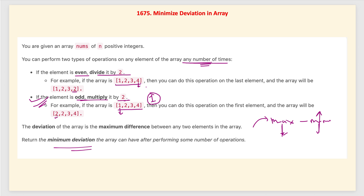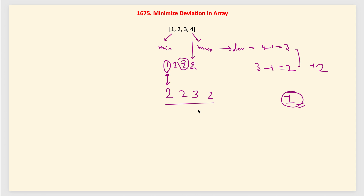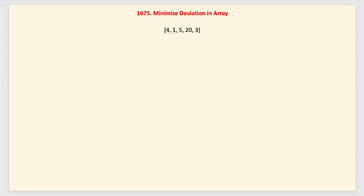What we will do to solve this problem: first, we apply the second operation to every odd number in our array by multiplying it by 2, so that all numbers in the array become even. Then we only follow the even rule to minimize the deviation. For example, in our array the odd numbers are first multiplied by 2, resulting in an all-even array.